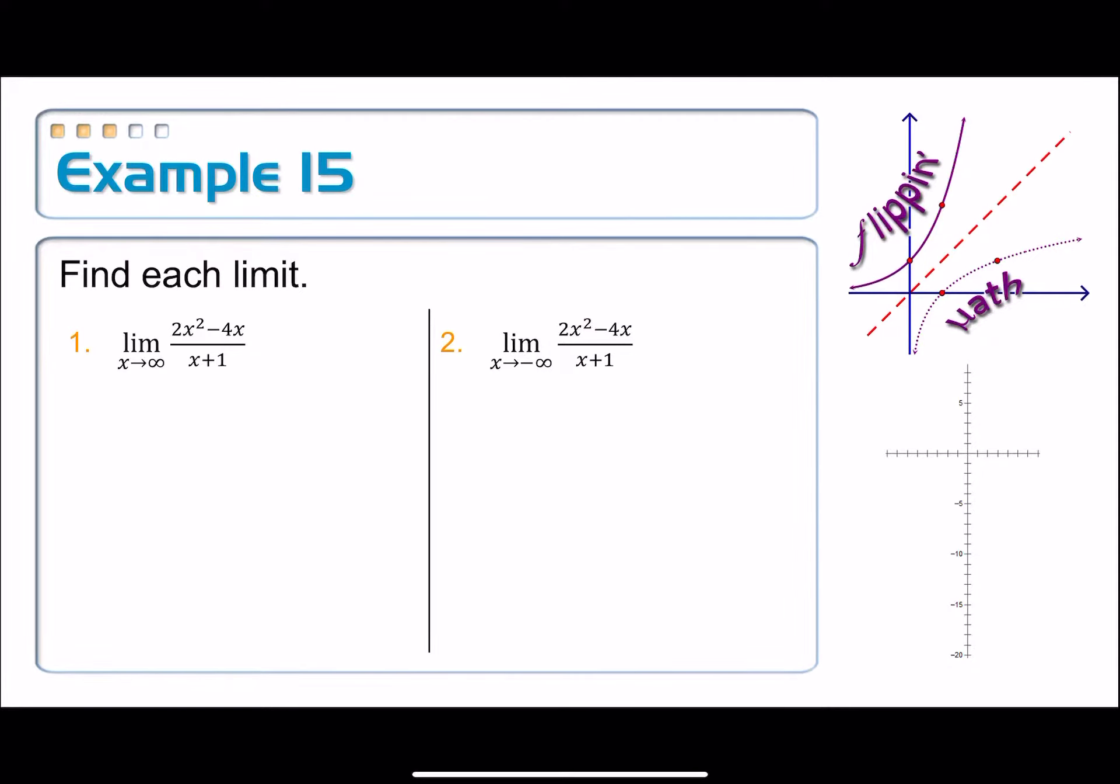Let's see how that might play out here in the next example. Find each of these limits. We've got the limit as x approaches infinity of the rational function 2x squared minus 4x over x plus 1, and we're doing the same thing on number two, just to negative infinity.